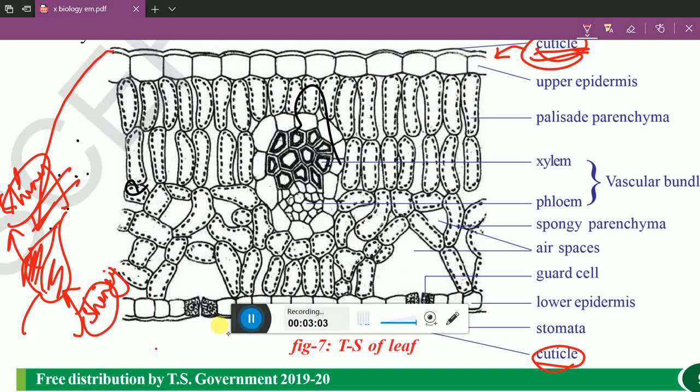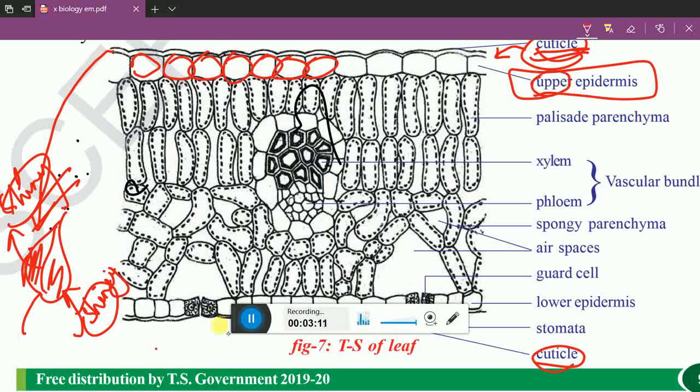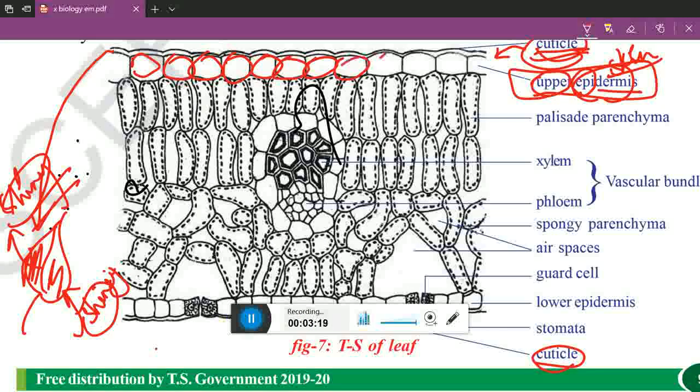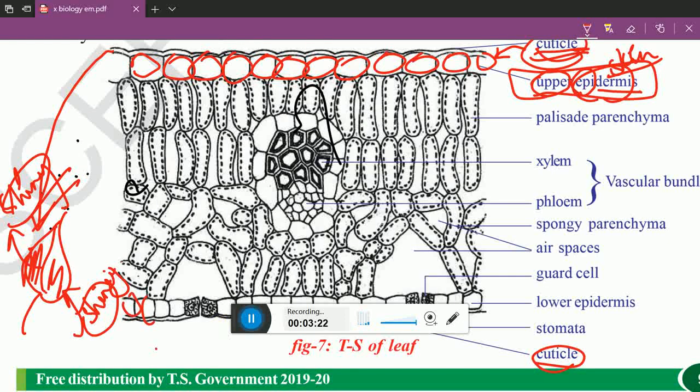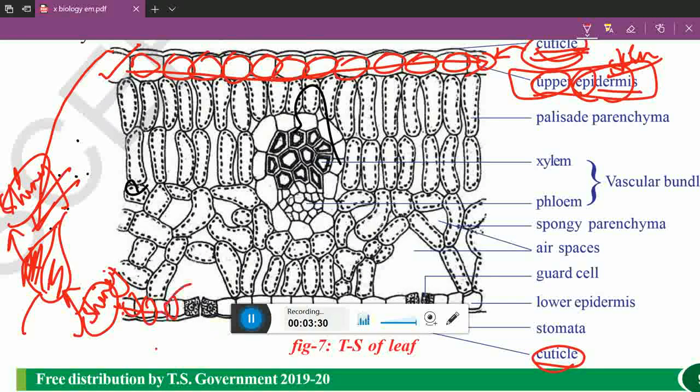Just below to that, a serial rectangular shaped upper epidermis. Epi means above, dermis means skin. So above skin is called as epidermis. This is upper epidermis. Same like that, you can see the lower epidermis. But you need to remember that upper epidermis is continuous. Lower epidermis is discontinuous.